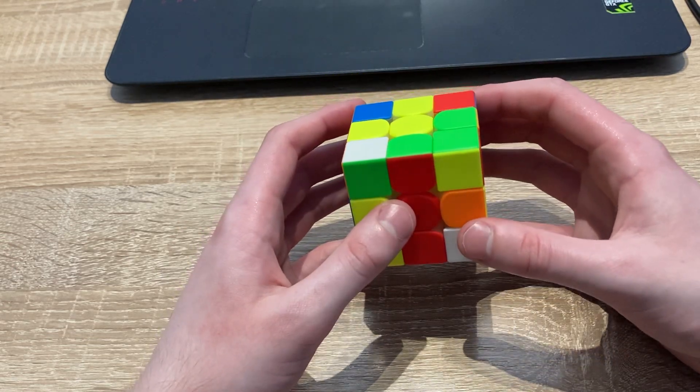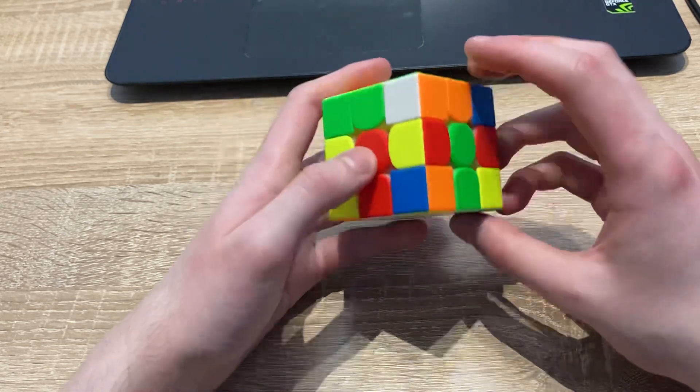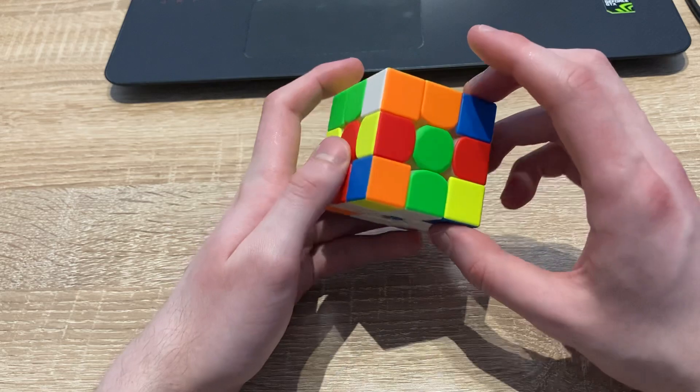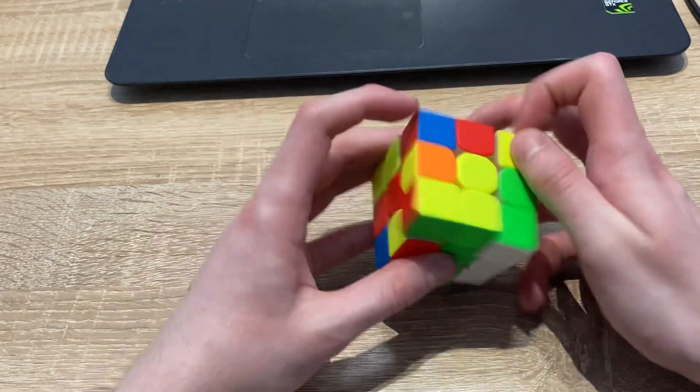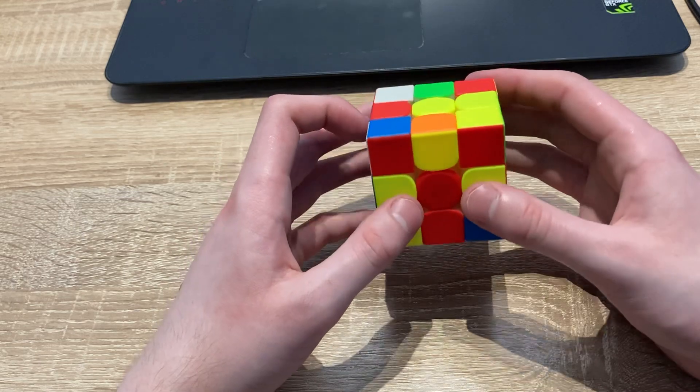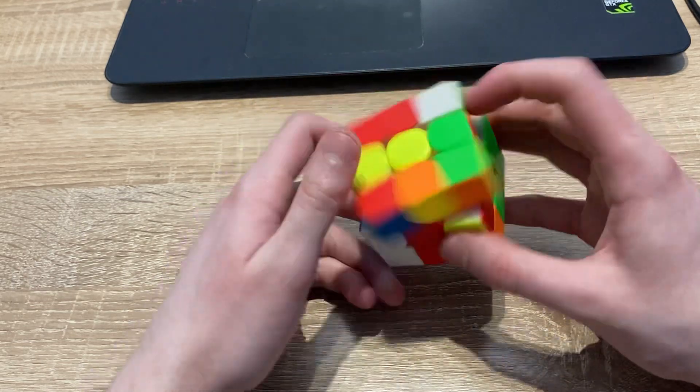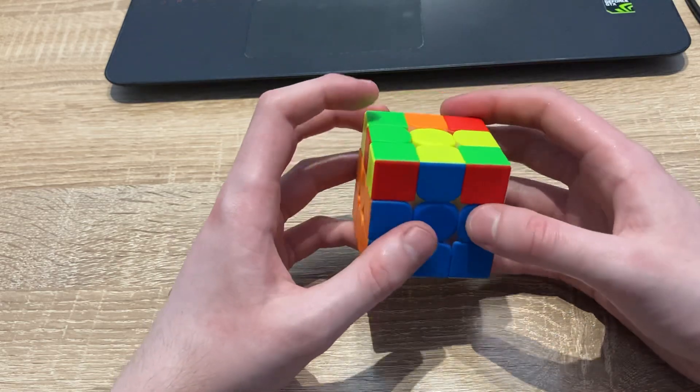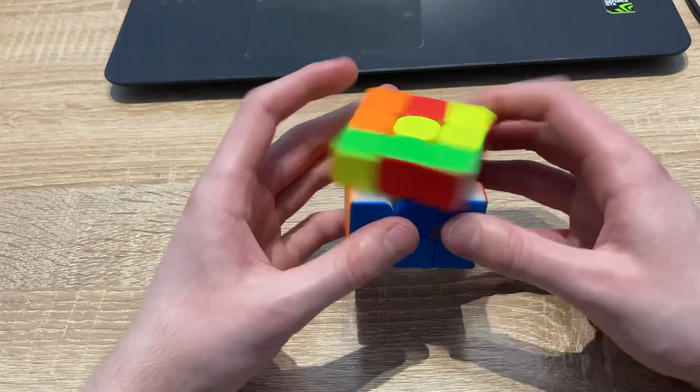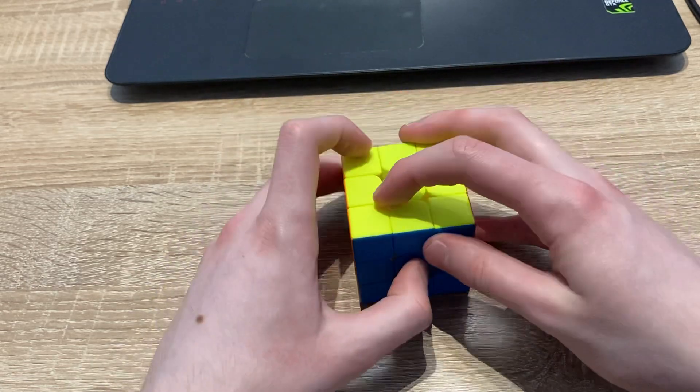My second pair would be most likely these two. And I would insert it with wide moves. So instead of rotating and doing three-movers, I just do it like that. My third pair would be these. Solve them like that. And my last pair.